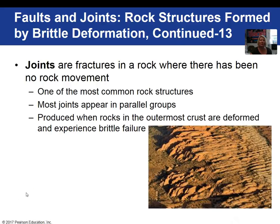The next rock structure I want to talk about due to brittle deformation are joints. These are simply fractures in the rock where no appreciable movement has occurred. Oftentimes joints occur in parallel groups. This image here is showing the parallel groups of joints. This is brittle behavior again.